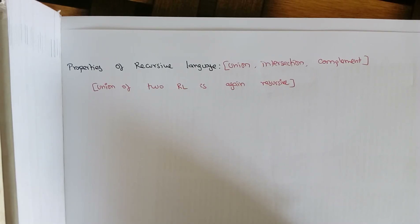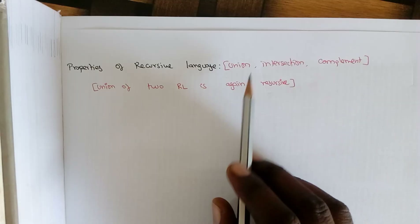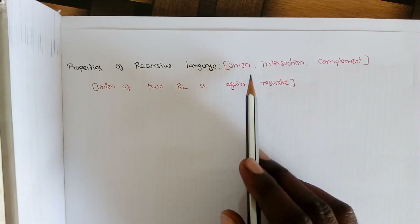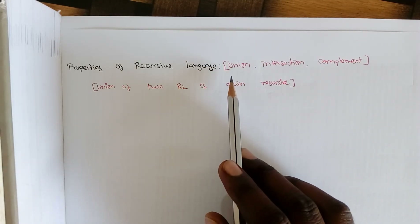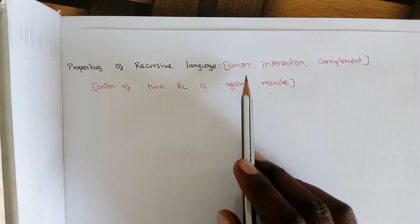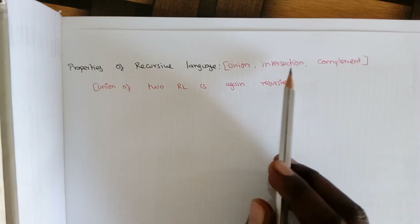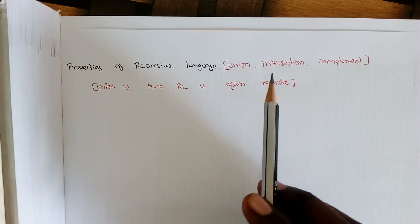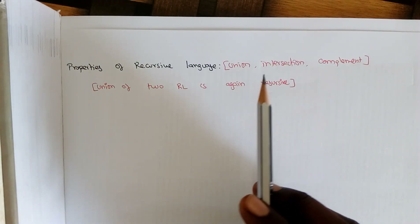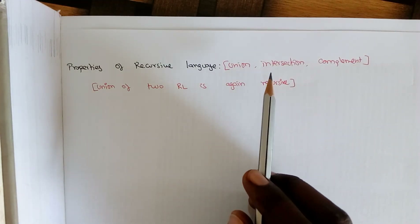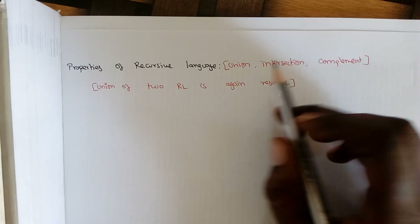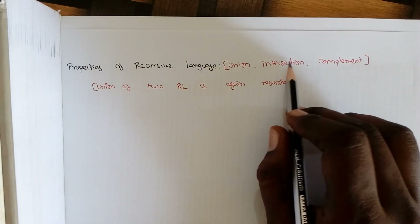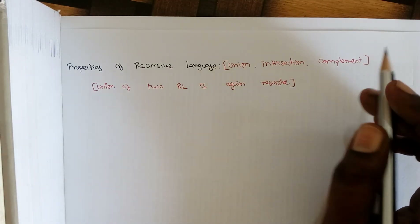In this video we will see the properties of a recursive language. There are three main closure properties. Here I am just focusing on union, intersection, and complement — a recursive language is again a recursive language under each of these. So we call a recursive language closed under union, intersection, and complement.